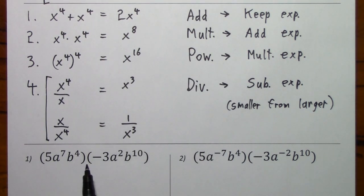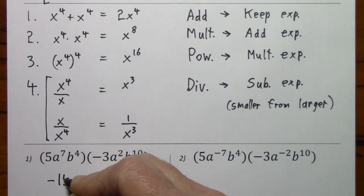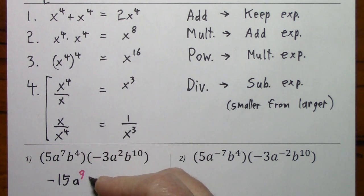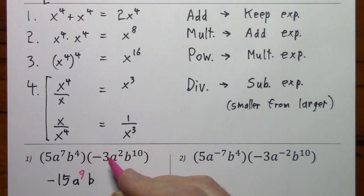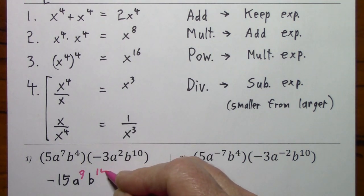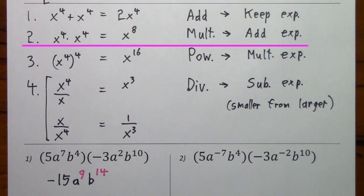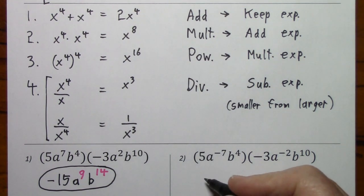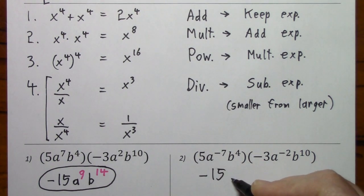Looking at number one: parenthesis next to parenthesis, so we'll multiply. And when you multiply like bases, you add exponents. Notice two is very similar to one — it's just that we have a couple of negative exponents to contend with. But we start out just the same: multiply. Like bases, so we add exponents.